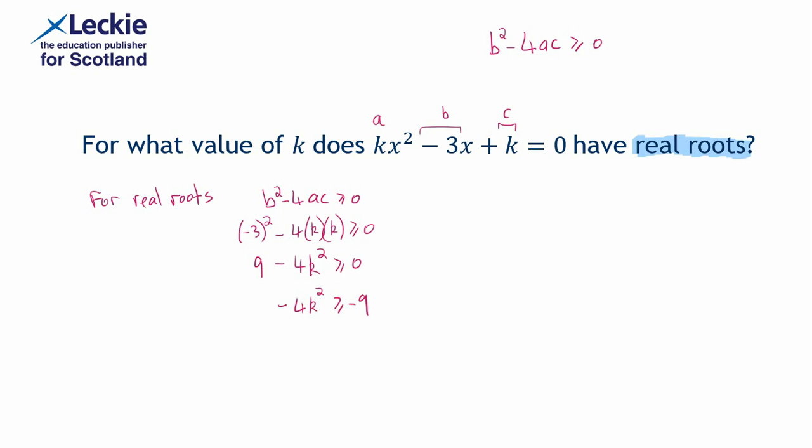So we can divide both sides of this inequality by negative 4, but there's something you must remember. When you divide an inequality by a negative value, then the direction of the inequality operator will change. And we end up with positive k squared is less than or equal to 9 over 4. So I've divided both sides by negative 4. Negative 9 divided by negative 4 gives us a positive 9 over 4, and that inequality operator has changed to face the opposite way.